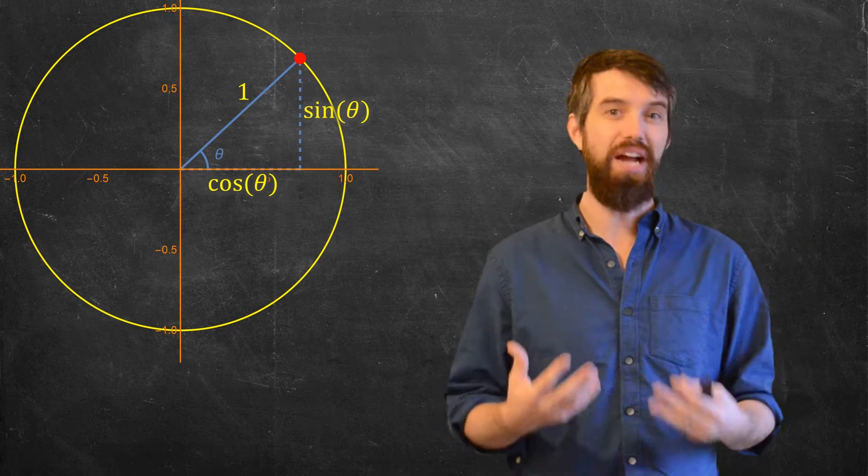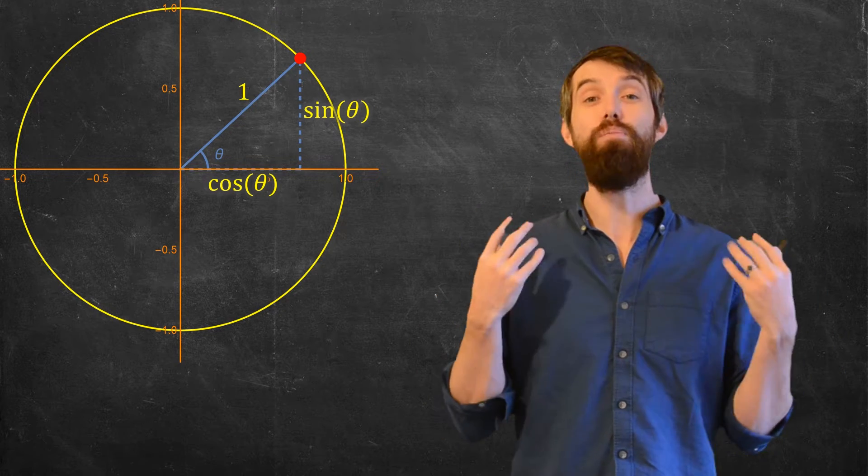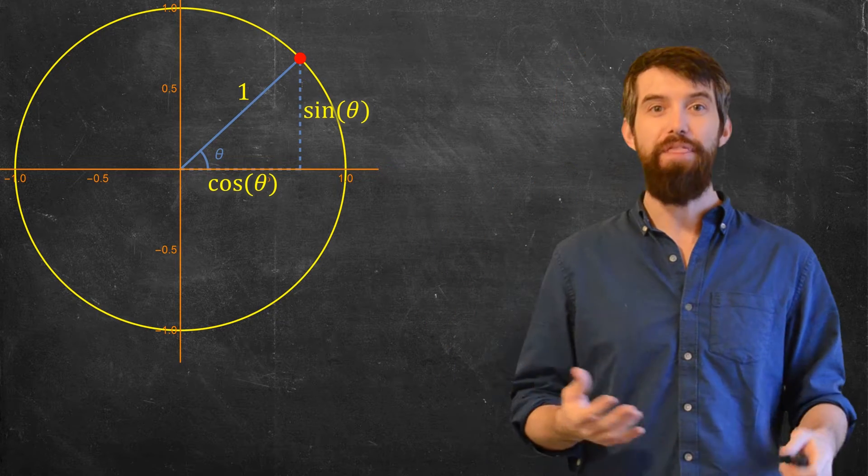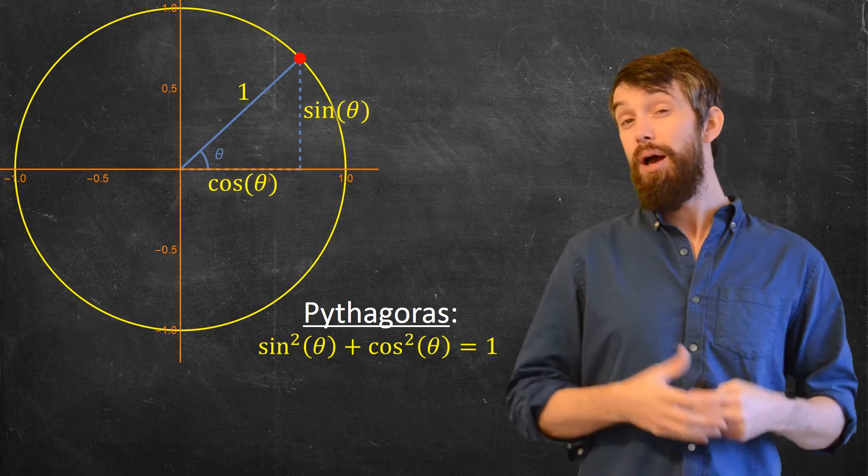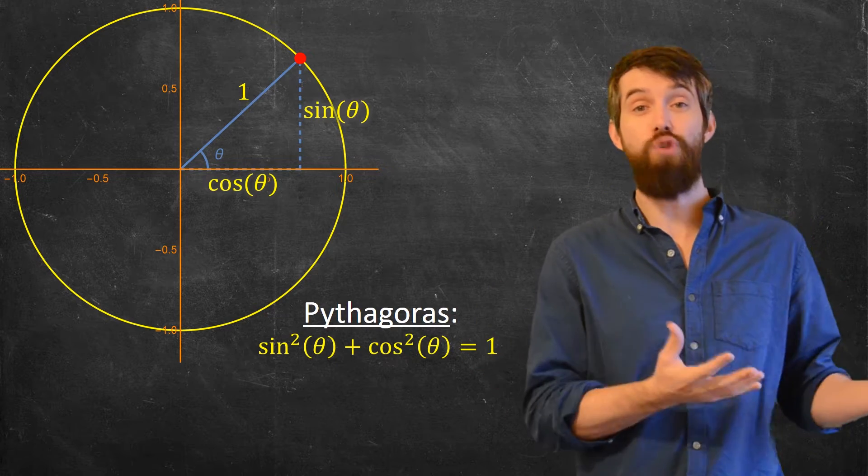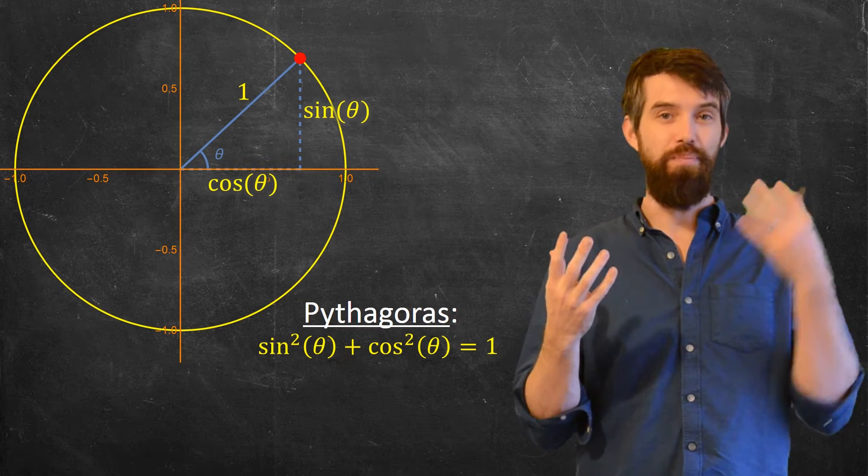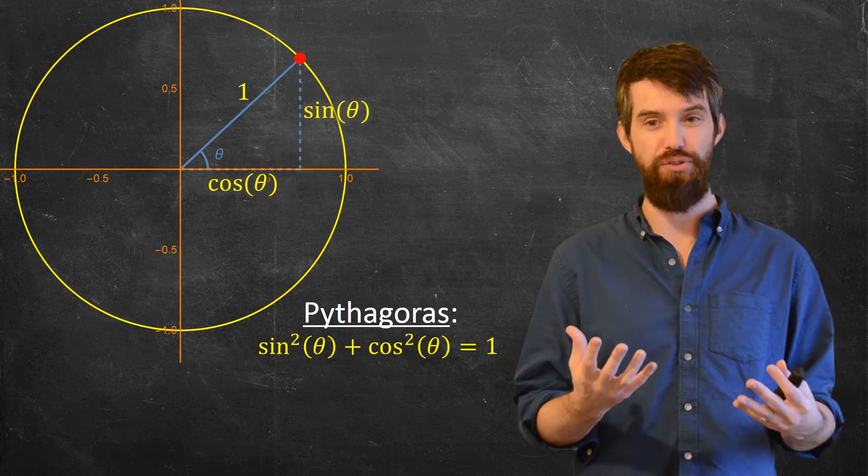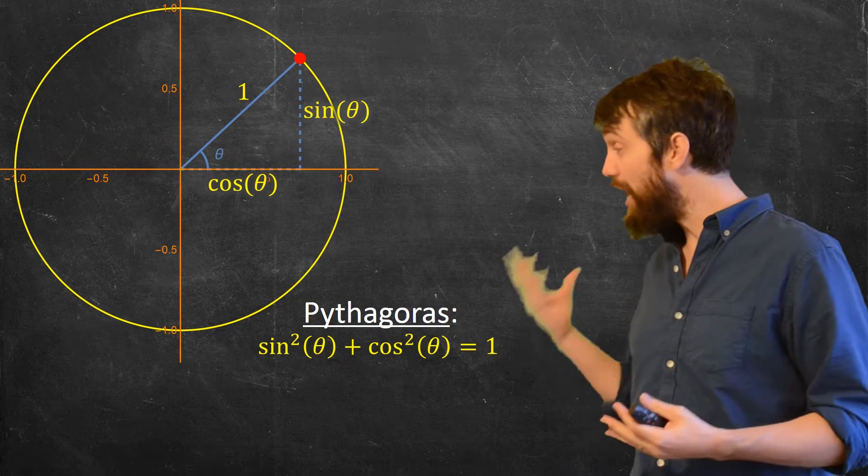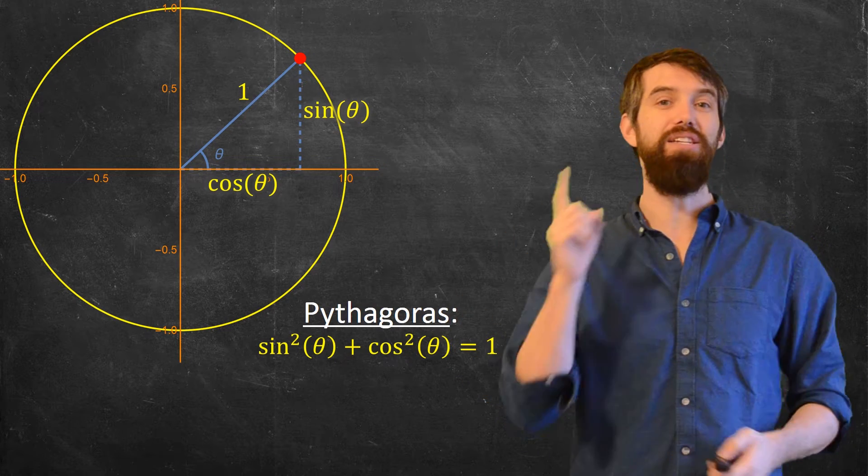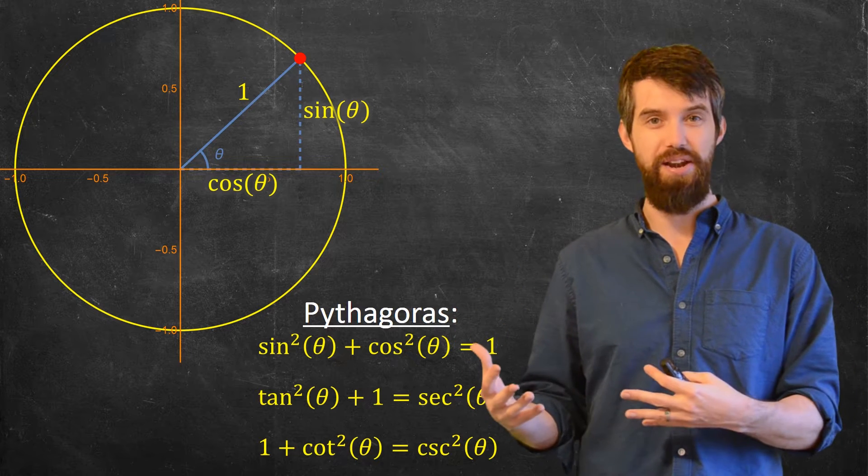This is how I can graph sine of theta and, more importantly, I can get a whole bunch of different identities from the unit circle. For instance, there is the Pythagorean identity. Pythagoras applies to any right triangle, of which this is just one, and it says that the height squared plus the base squared is the hypotenuse squared. So in this context, sine squared plus cos squared is 1. And then from this identity, I can get two more of these so-called Pythagorean identities.